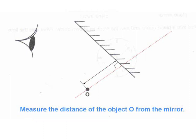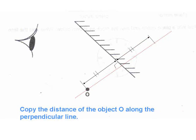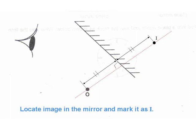Then you measure the distance of the object from the mirror, and then you copy the distance into the mirror and locate the object I along the line.